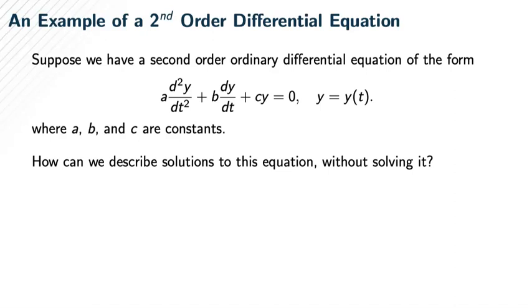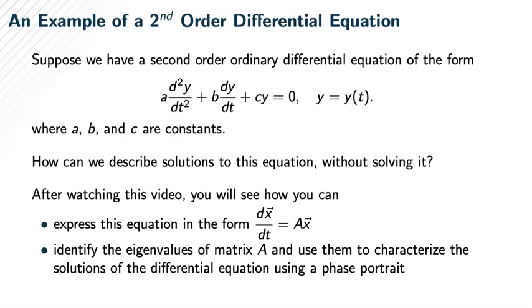One way is to use eigenvalues and eigenvectors of a matrix. We want to express that second-order differential equation as a system of differential equations, giving us a matrix. We can determine the eigenvalues and eigenvectors of that matrix and use them to characterize the solutions of the second-order differential equation.